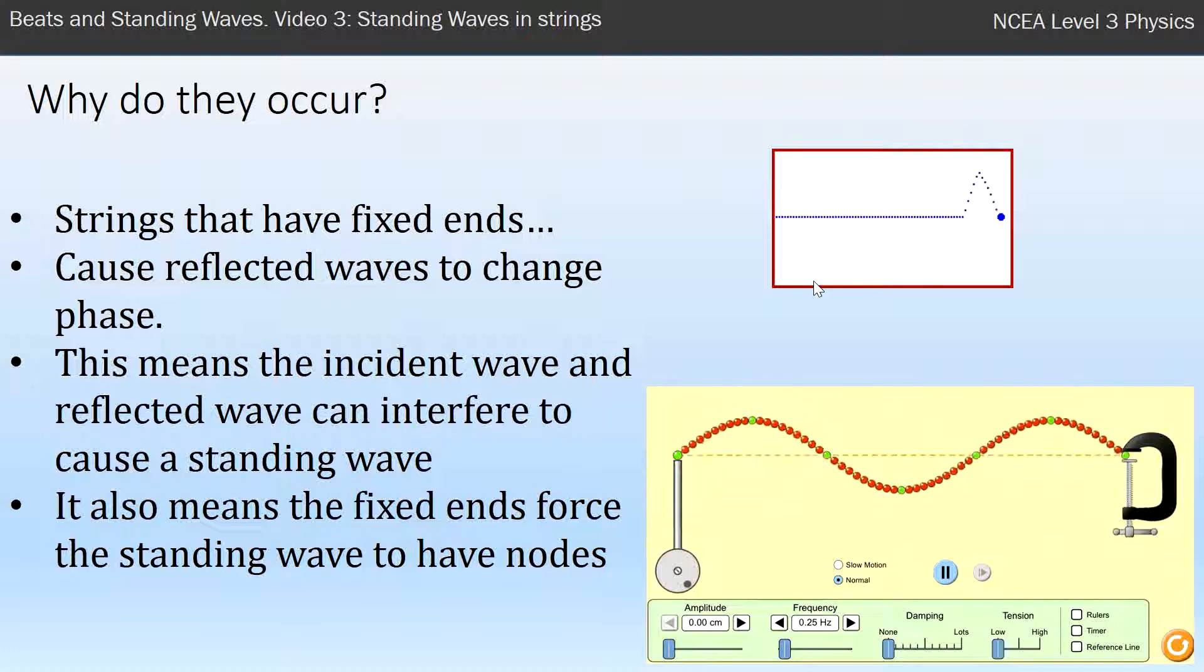You have nodes where there are areas of the wave where there's no displacement, and we have those because the ends are fixed—they can't displace, they can't move here and they can't move here. So these are forced to be nodes, and by forcing these to be nodes it forces us into certain standing waves throughout the string.